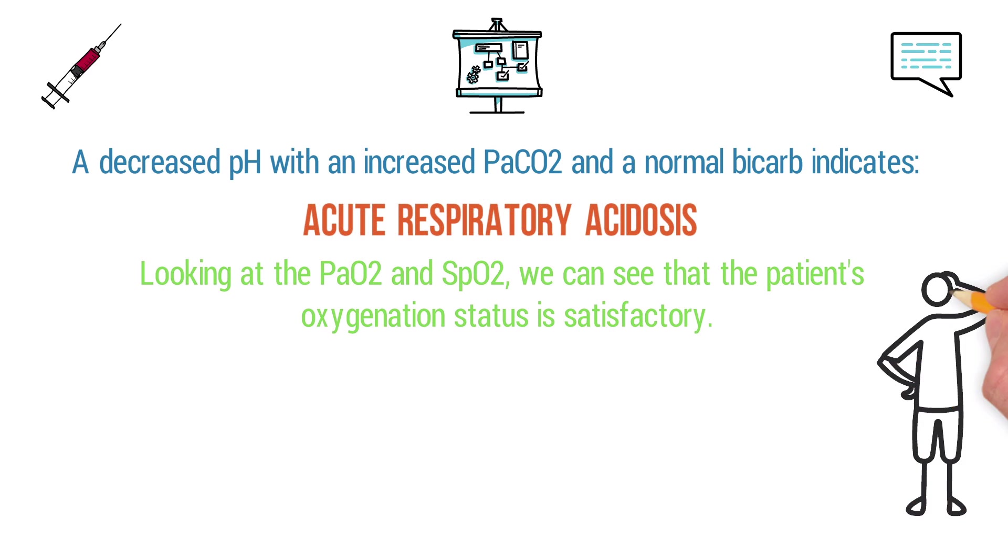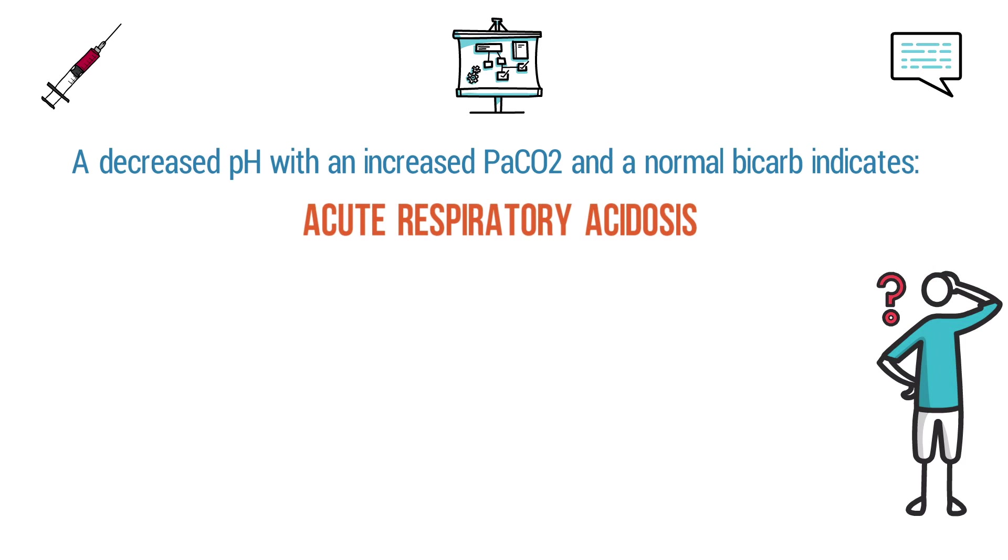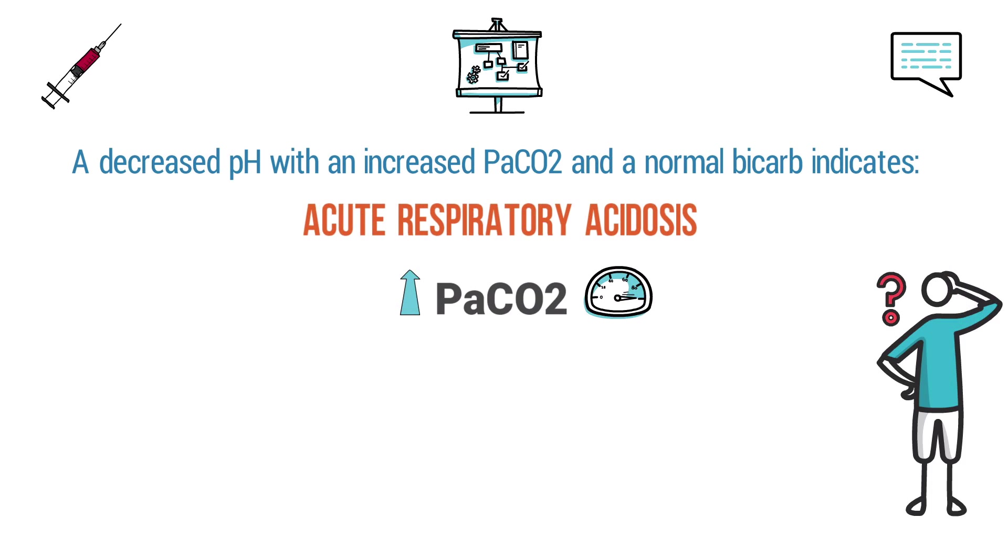So now we need to figure out what we can do to correct the respiratory acidosis to get the pH back into the normal range. The elevated PaCO2 level is what's causing the pH to be acidotic. This means that we need to blow off some of that excess CO2, and we can do so by increasing the minute ventilation.